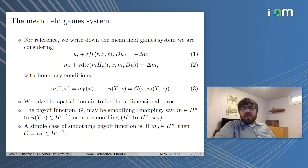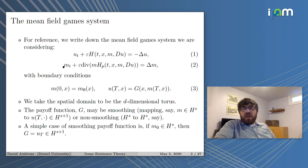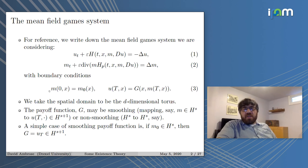I'll try to make minimal assumptions about H — no additive separability or convexity, just some boundedness of H and its derivatives on certain function spaces. Then we have the evolution equation for M, the distribution of agents in the game: M_T plus epsilon times divergence of M times H_P of (T, X, M, DU) equals the Laplacian of M. The boundary conditions are: M at time zero is M-naught, and U at time capital T is the payoff function G applied to the final distribution M at time T. For convenience, we take the spatial domain to be a d-dimensional torus.